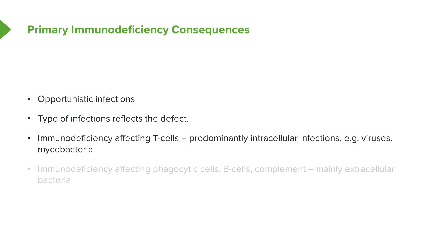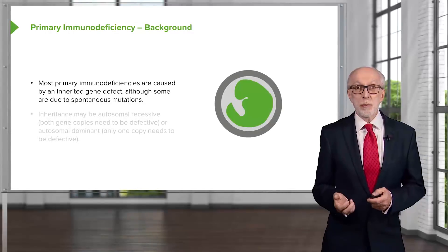Immunodeficiency affecting T cells results in predominantly intracellular infections, for example viruses, mycobacteria and so forth. Whereas immunodeficiency affecting phagocytic cells, B cells and complement mainly results in extracellular bacteria.